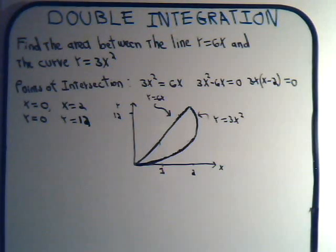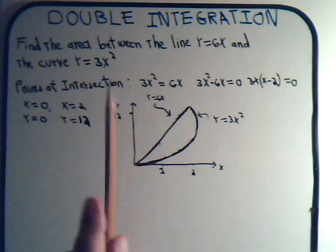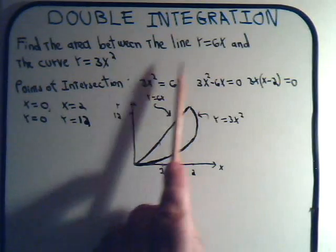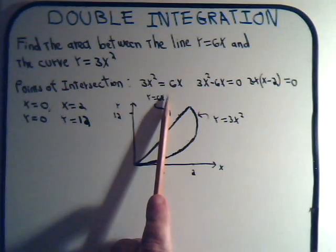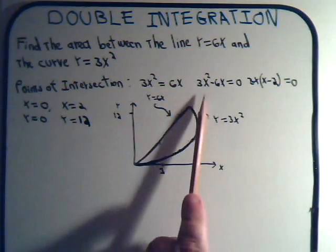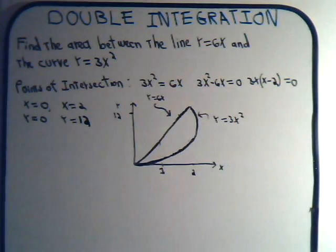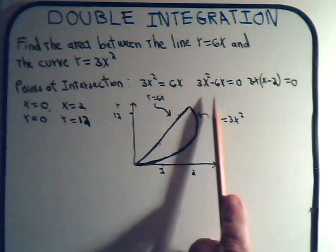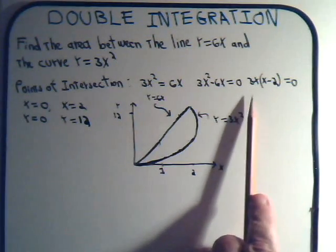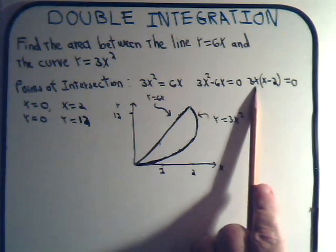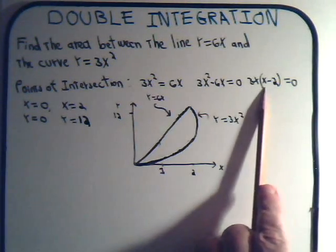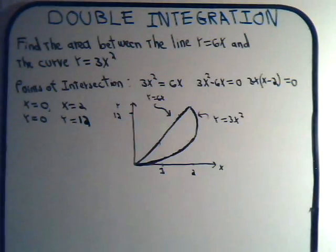To get things set up here, first order of business, we find the points of intersection. Of course, at those intersecting points, 3x squared will equal 6x, so we can pretty easily solve this for x, putting the 6x over here instead of equal to 0. We can factor out the 3x, and it looks like we have two intersecting points, one when x equals 0, and another one when x equals 2.